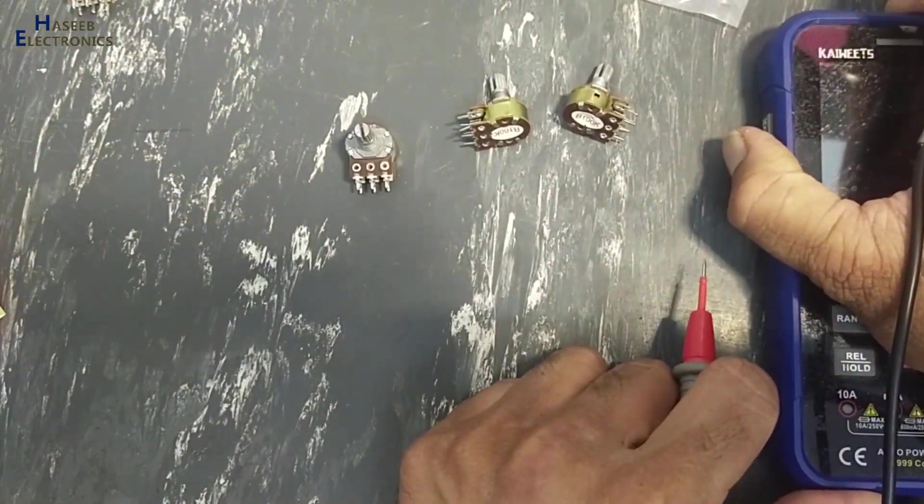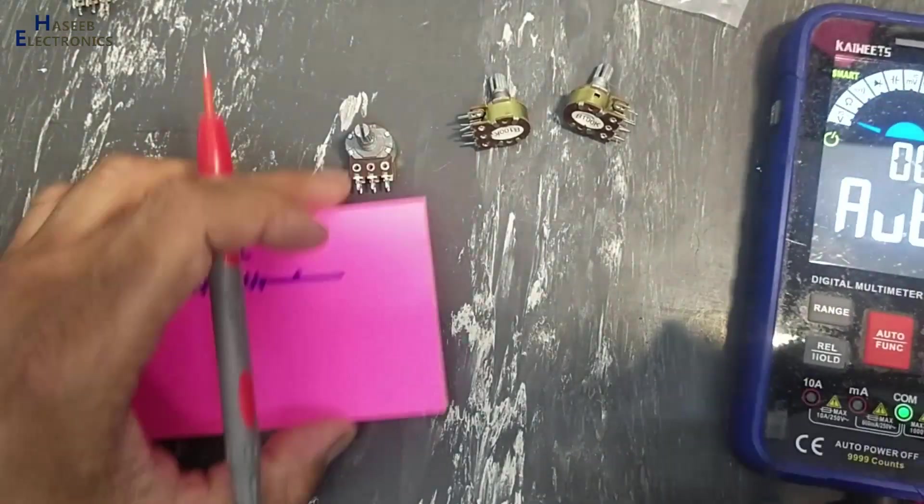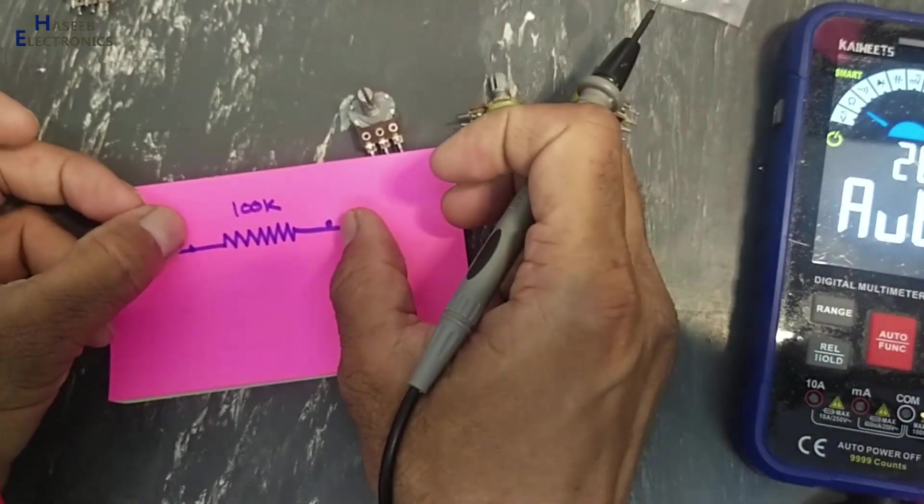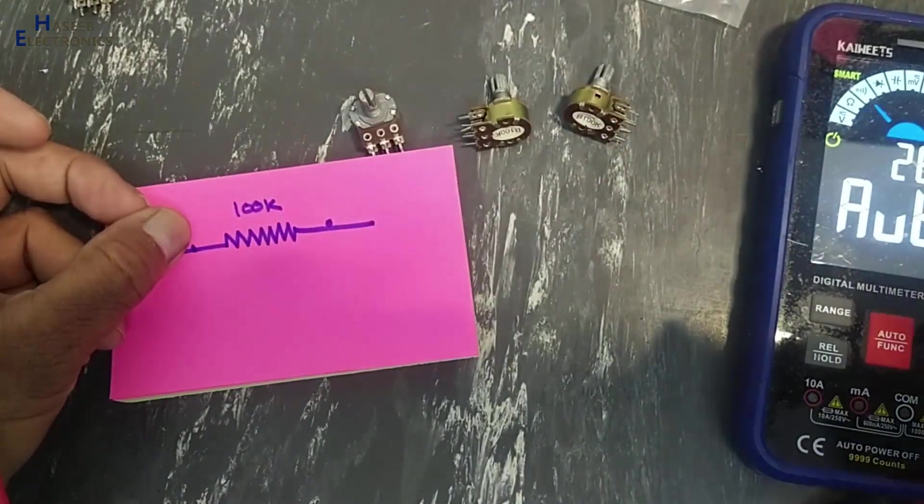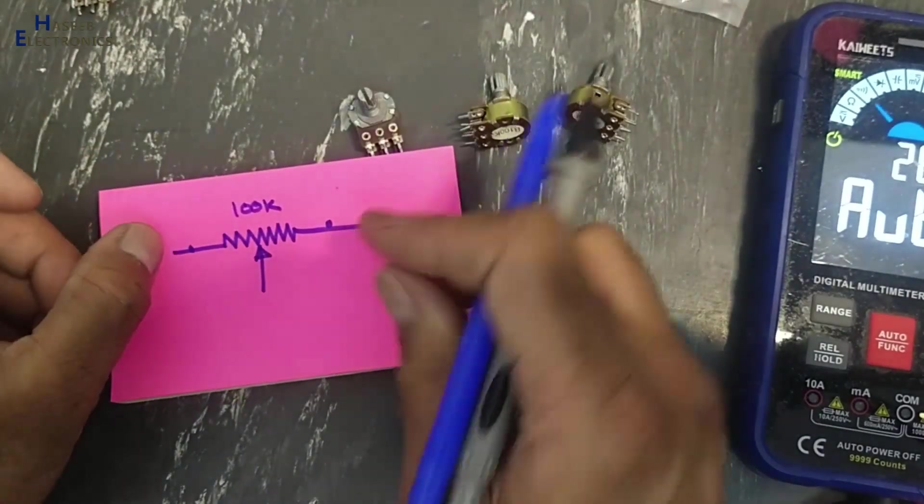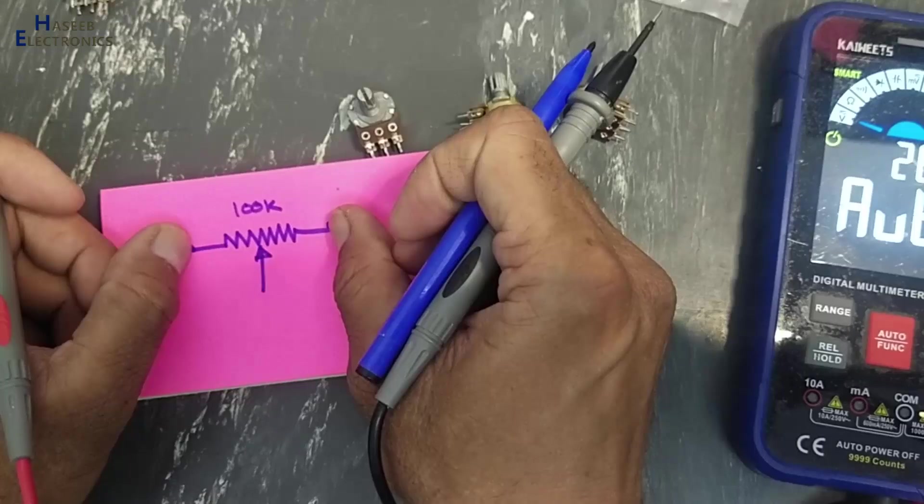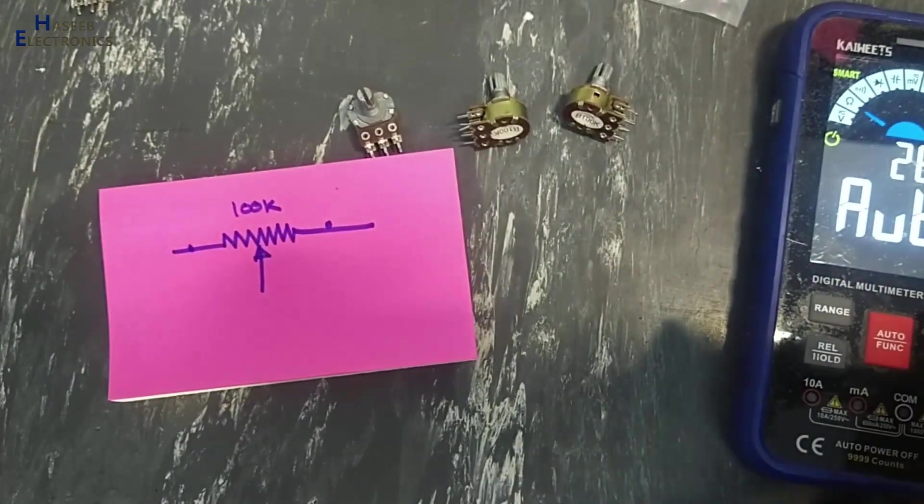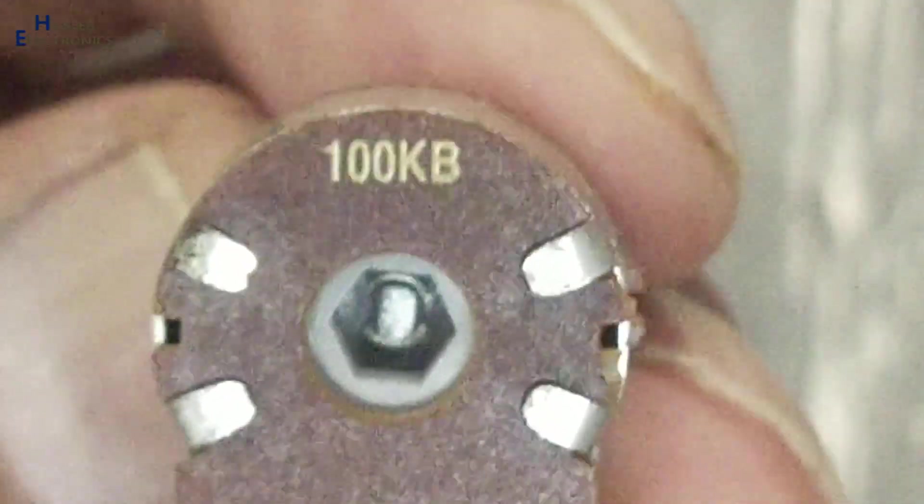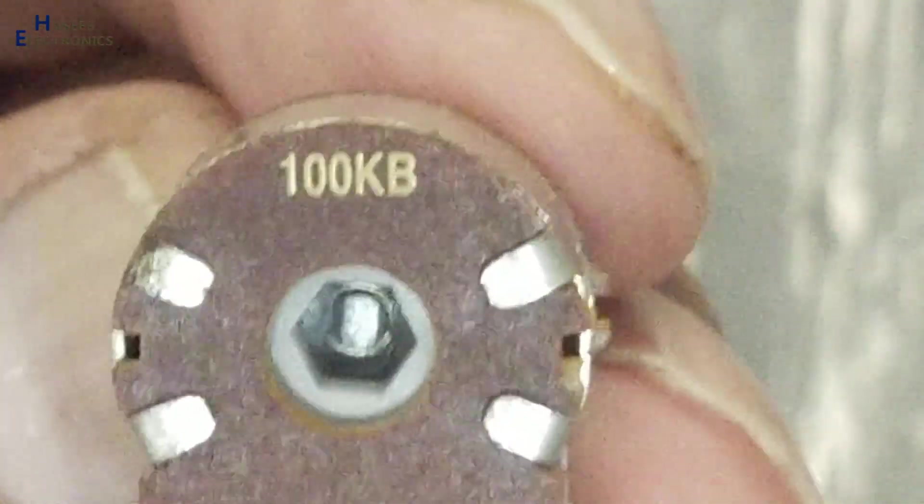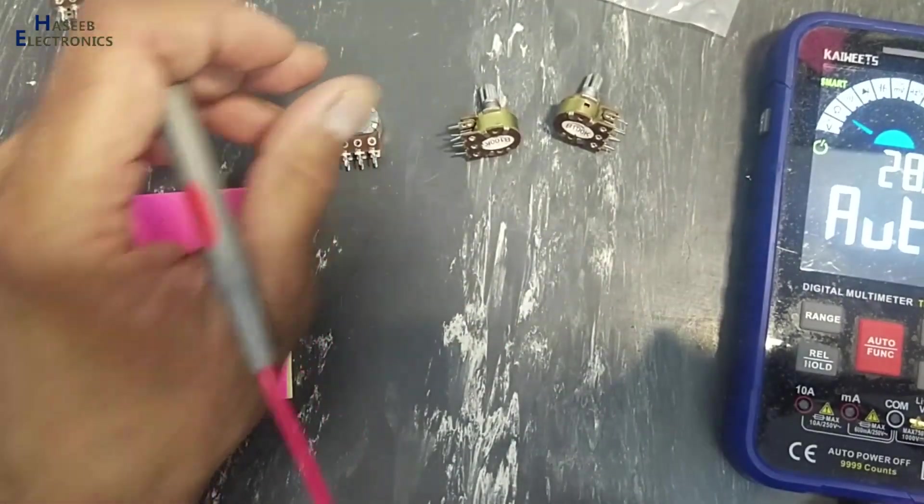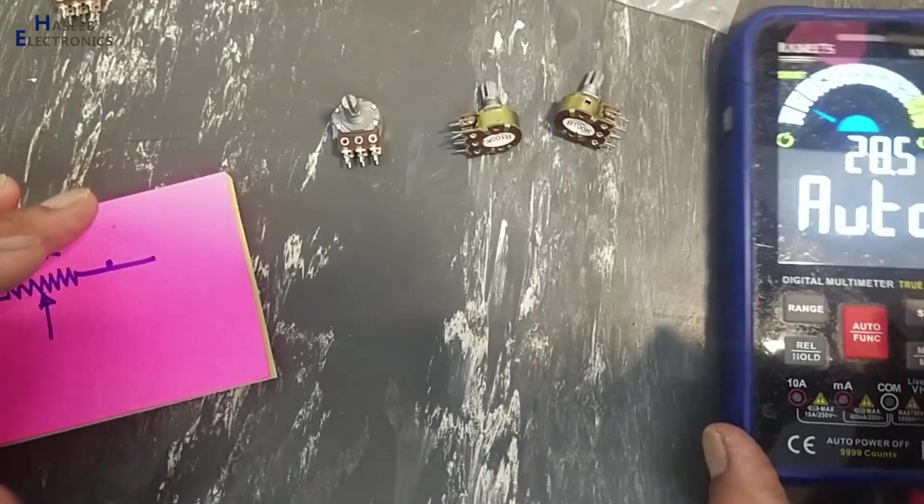When we say potentiometer, it is a resistor between two pointers and the third pointer that is the slider. From here to this point, it is a 100 kilo ohms resistor. 100k B - that means it is a linear potentiometer. If there is A, that is analog potentiometer.